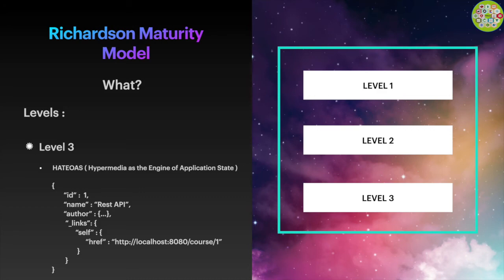In short, according to HATEOAS, along with the actual data we also send references to related resources. So if you add level 1, level 2, and HATEOAS to an API, then it will be considered a level 3 API.